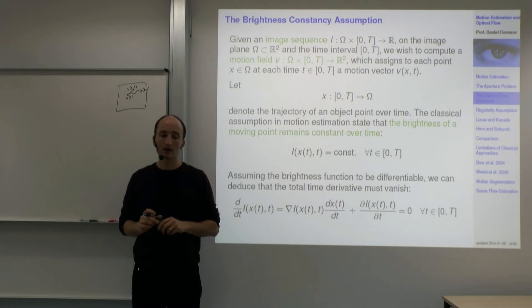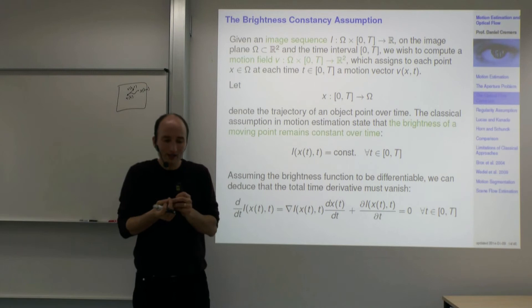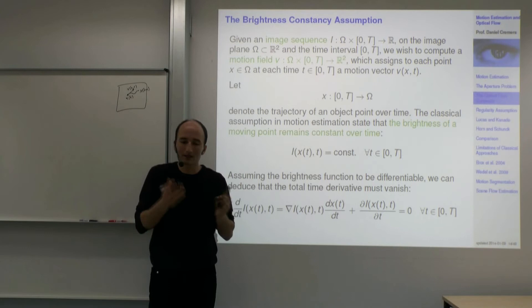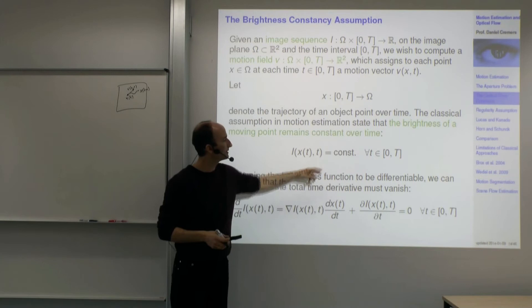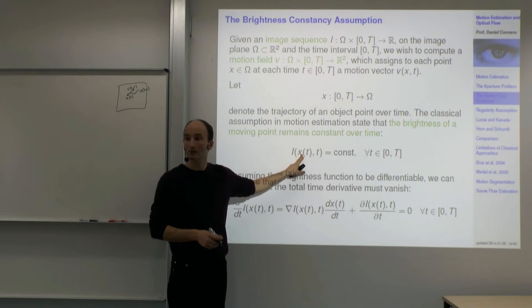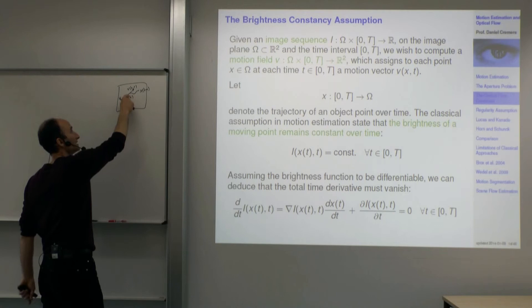If you don't make the brightness constancy assumption, there's no way to find correspondences — if a point can have arbitrary intensities that have nothing to do with each other, you cannot find correspondences. So the assumption is that brightness is constant: for all times, the intensity evaluated at the moving point x(t) is the same. It doesn't mean the intensity at a fixed pixel stays the same; it means the intensity evaluated at the moving point is constant.